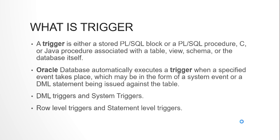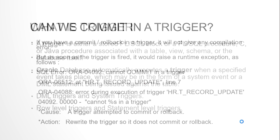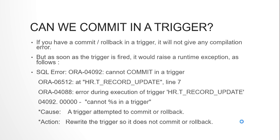So how can we commit in a trigger? If you have a commit or rollback in a trigger, it will not give any compilation error. But as soon as it gets the triggering event and the trigger is fired, you will get SQL error ORA-04092: cannot commit in a trigger. It would be a runtime exception.